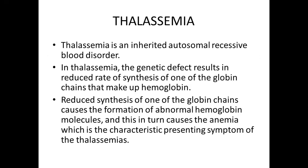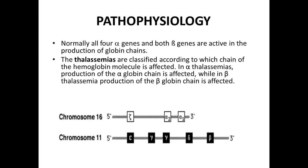The anemia is the characteristic presentation of thalassemias. Normally all four alpha chains and both beta chains are active in production of globin chains — our chromosome has four alpha and two beta chains. Thalassemias are classified according to which chain is affected: in alpha thalassemia the alpha chain production is affected, while in beta thalassemia the beta globin chain production is affected.